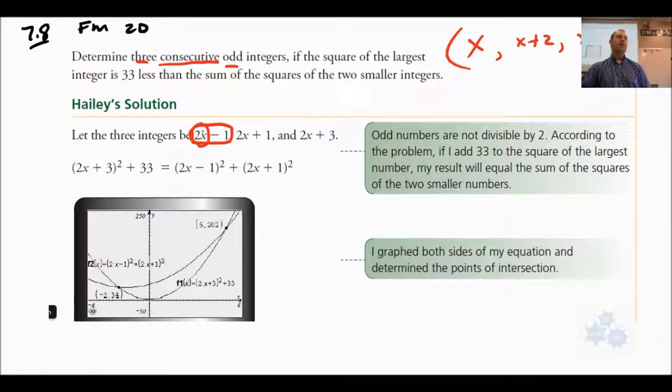2x by itself would be an even integer - that's the definition of an even integer, it can be evenly divided by 2. So you could do either 2x plus 1 or 2x minus 1 for your first odd integer. They chose 2x minus 1. So we have 2x minus 1, then 2x plus 1 would be the next one, then 2x plus 3 would be the third consecutive odd integer.